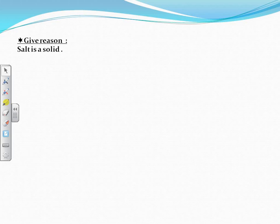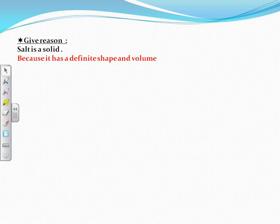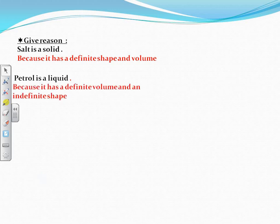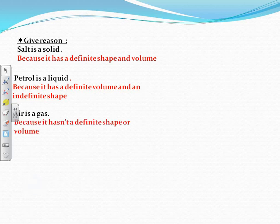Here we have some questions. Give reason for: Salt is a solid — why is salt a solid? Because it has definite shape and definite volume. Number two, petrol is a liquid — why is petrol a liquid? Because it has definite volume and indefinite shape. Why is air a gas? Because it has no definite shape or volume.